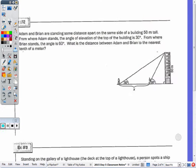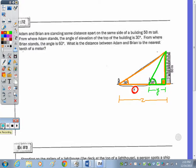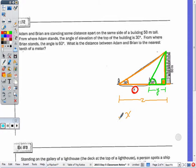Number two, Adam and Brian are standing some distance apart on the same side of the building, which is 50 meters tall. From where Adam stands, the angle of elevation to the top of the building is 30 degrees. From where Brian stands, the angle is 60 degrees. What is the distance between Adam and Brian to the nearest tenth of a meter? So if you look again within the picture, within the orange triangle that goes to the 30 degree angle, this bottom side all the way across would be Z. And within the green triangle, the 60 degree angle, that bottom side is going to be Y. So to get X, we need to find Z and subtract Y.